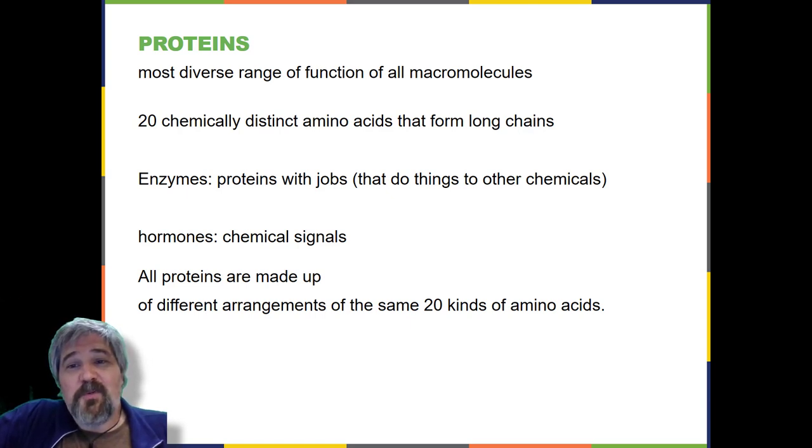Hormones are chemical signaling molecules, usually proteins or steroids, secreted by an endocrine gland or groups of endocrine cells that act to control or regulate specific physiological processes, including growth, development, metabolism, and reproduction. For example, insulin is a protein hormone that maintains blood glucose levels.